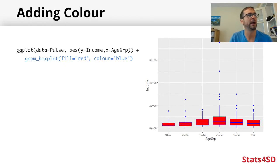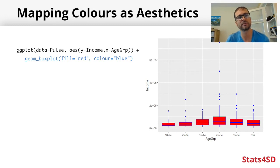What if instead of just having one color for all our boxes, we wanted different colors for each of our different age groups? This is where we don't have a static color - we actually want to use color or fill as an aesthetic, because we want the fill color of the boxes to be mapped to one of the columns from our data frame.